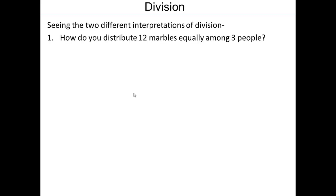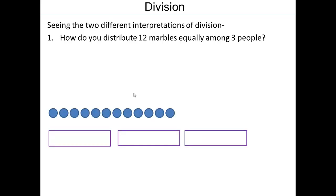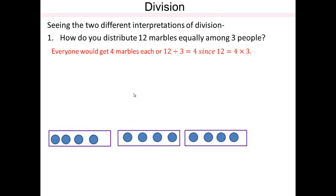Seeing the two different interpretations is important. Suppose you have 12 marbles and want to equally distribute them amongst 3 people — 3 groups — and you want to know how many in each group. Distributing one marble at a time to each person until all are given out, everybody gets 4 marbles. So 12 divided by 3 equals 4, since 12 is 4 times 3: 3 people, and everybody got 4 marbles.